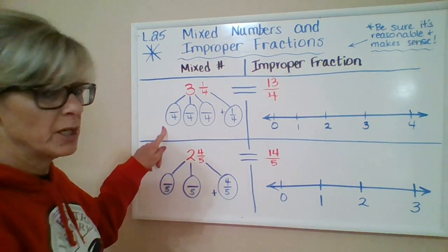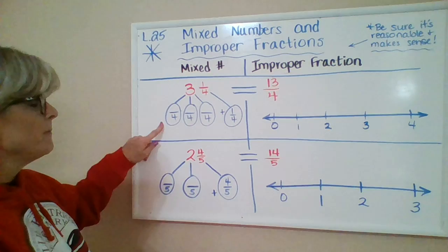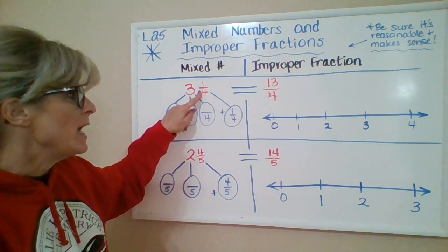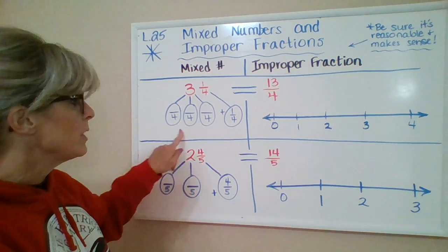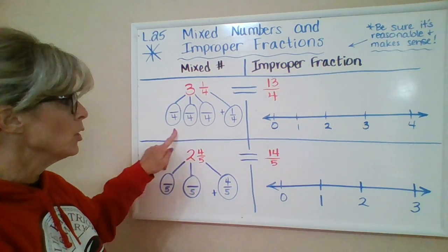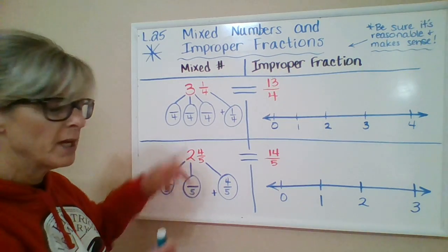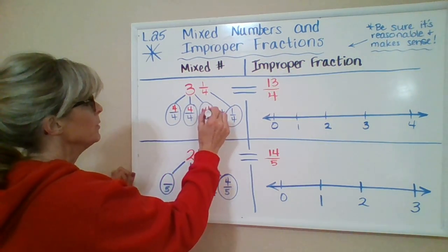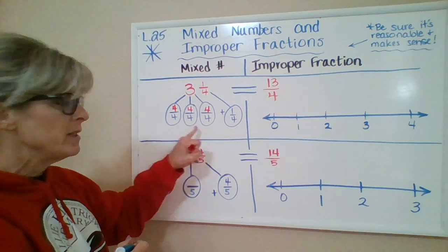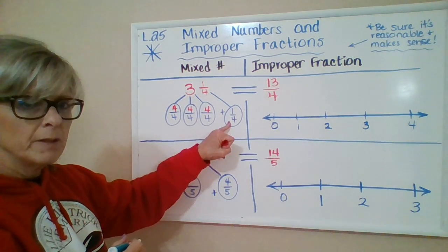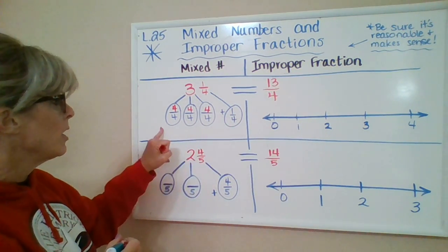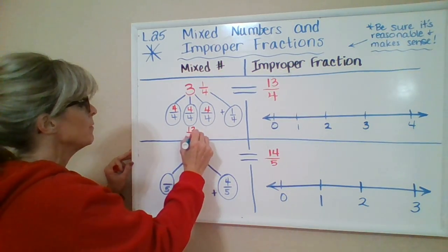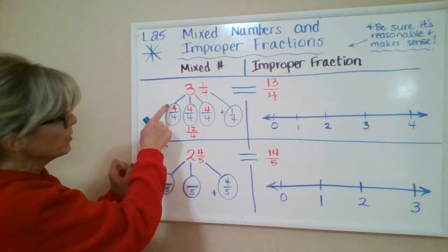Let's take a look at this one on the top here. Three and one-fourth would change into three fractions below to show three whole numbers. I'm going to put four fourths on each of those, and then we still have the one-fourth.